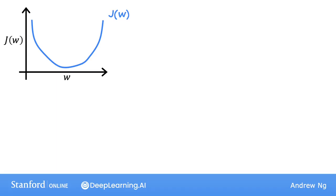Here on the horizontal axis is parameter w and on the vertical axis is the cost J(w). Now let's initialize gradient descent with some starting value for w. Let's initialize it at this location. So imagine that you start off at this point right here on the function J.